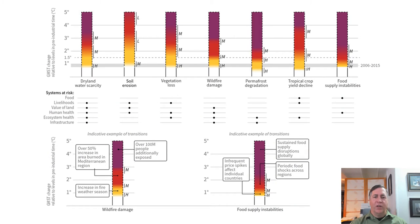This shows projected changes, impacts, and risks to humans and ecosystems for land-based processes compared to the temperature increase. At the 1.1 degree of warming that's already occurred, we are already seeing water scarcities, soil erosion, vegetation loss, wildfire damage, permafrost degradation, crop yield declines, and food supply instabilities. The higher the temperature climbs, the more severe the impacts. Above 2 degrees, we will almost certainly see sustained food supply disruptions globally and major permafrost melting. Melting permafrost releases more CO2 and methane into the atmosphere — one of the feedback loops that will make temperatures climb even higher. Above 3 degrees, we will see many vegetated areas turn into deserts.